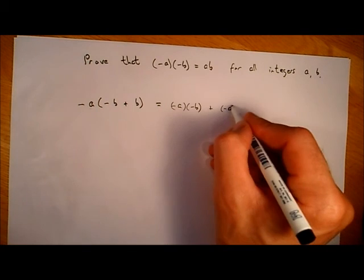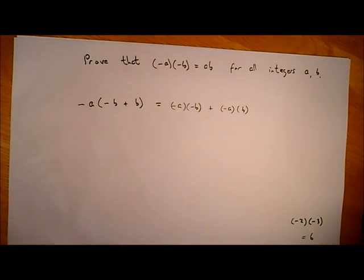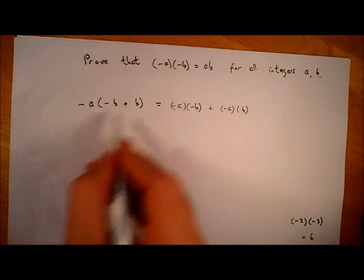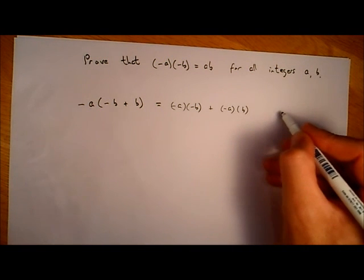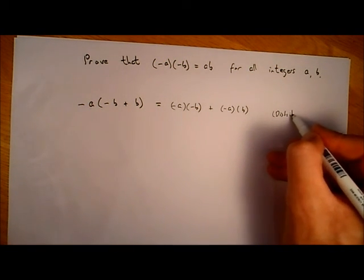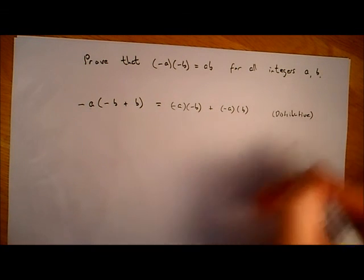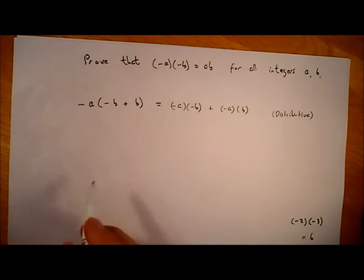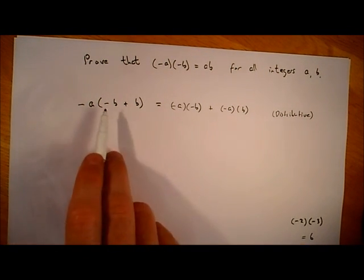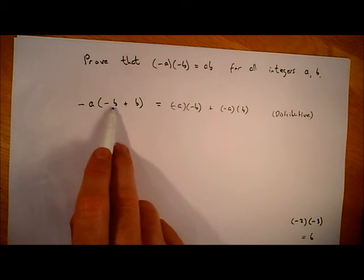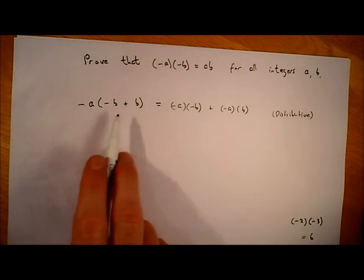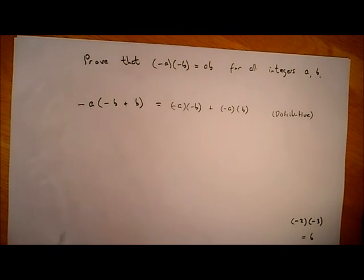Okay, but now if we look at the left-hand side, that's by the distributive property. And so we have minus b plus b on the left-hand side. Well, minus b plus b, b is the additive inverse. Remember, every integer has a number that you can add to it that gives you zero, it's like the opposite of it.